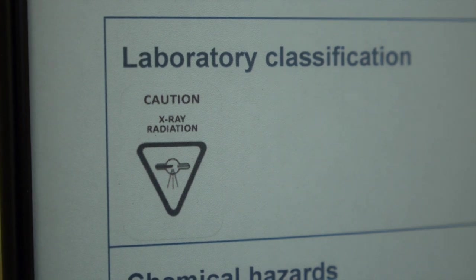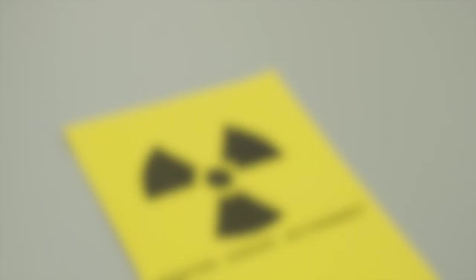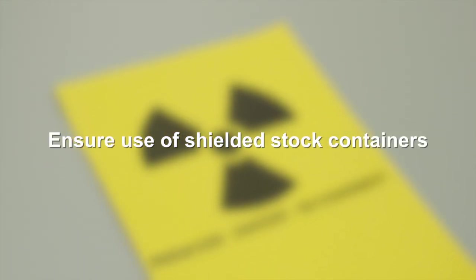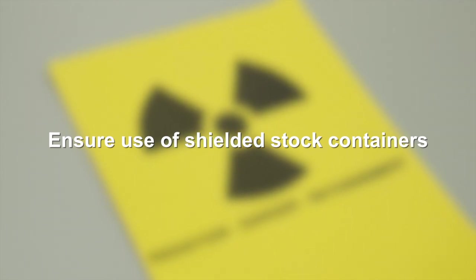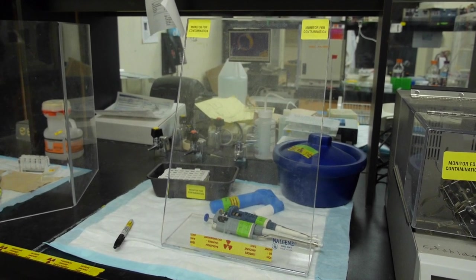For mixed emitters, use plexiglass or aluminum as your first layer of shielding, closest to the source. Next, use a layer of lead as your secondary layer of shielding.